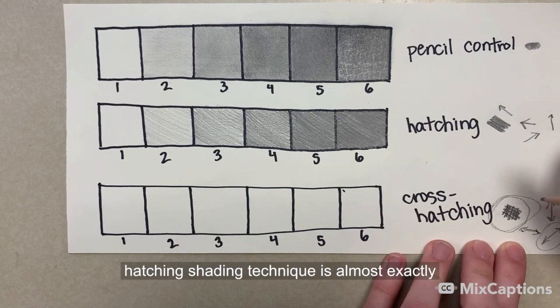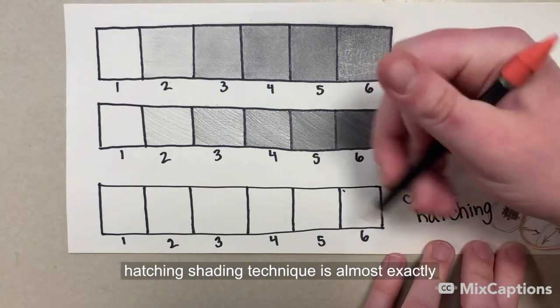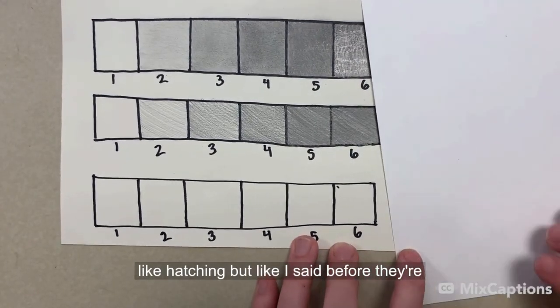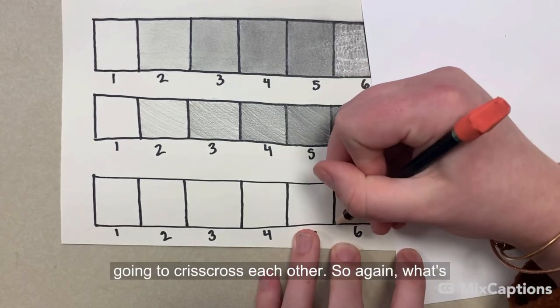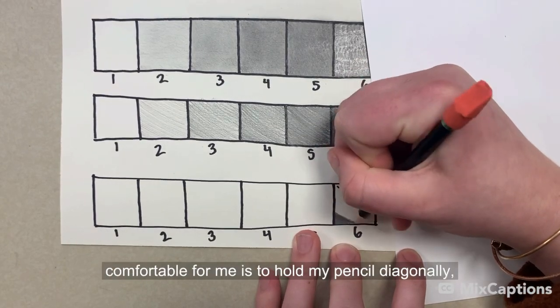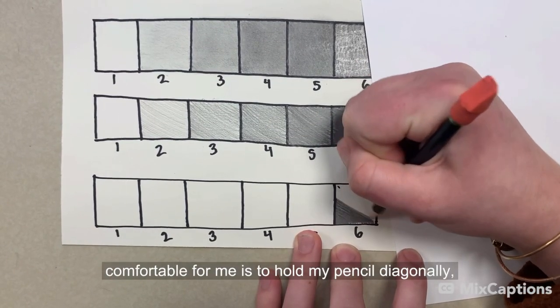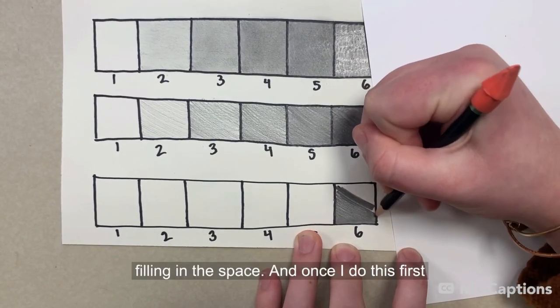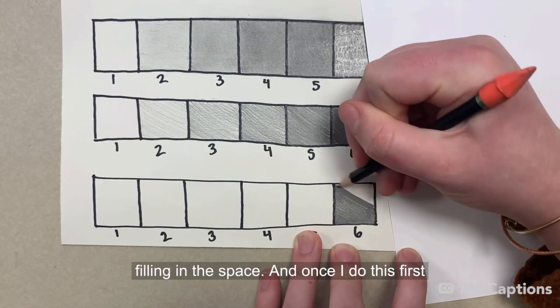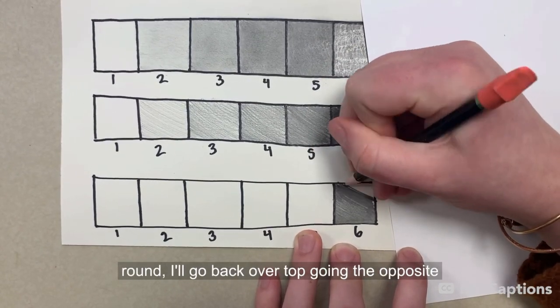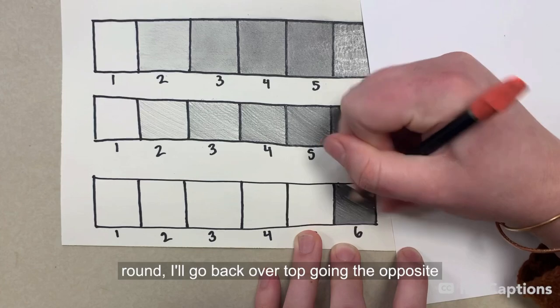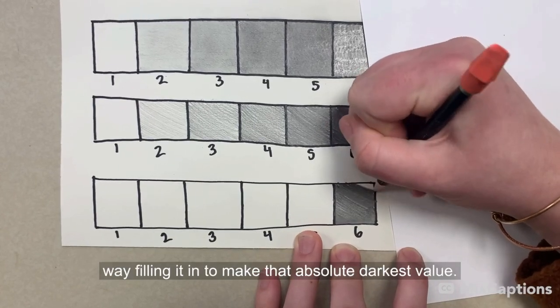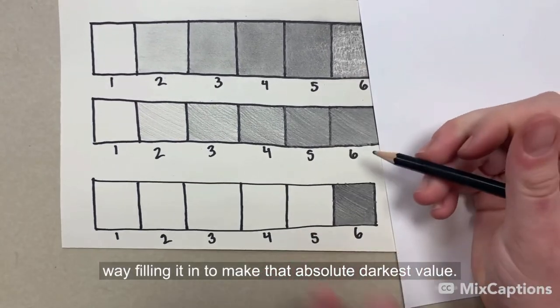The cross hatching shading technique is almost exactly like hatching, but like I said before, they're going to crisscross each other. So again, what's comfortable for me is to hold my pencil diagonally. So I'm going back and forth with diagonal lines filling in the space. And once I do this first round, I'll go back over top, going the opposite way, filling it in to make that absolute darkest value.